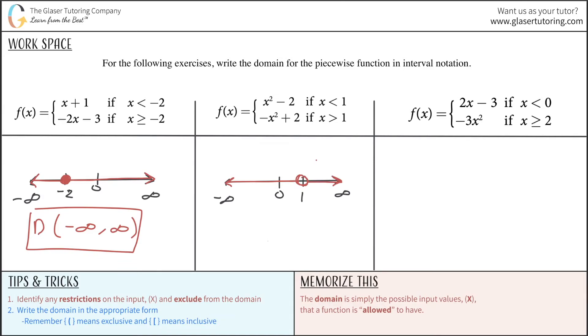So again, I would create an open circle here around one and then shade all the way to the right. Notice though, this one is not filled in. It's never equal to one. So that's a condition for the domain that we have to take into account. So there's really two parts of this domain, the left part and the right part, not including one.